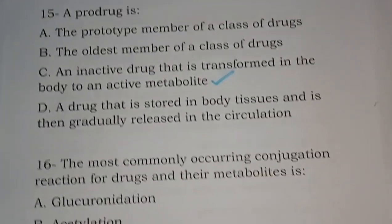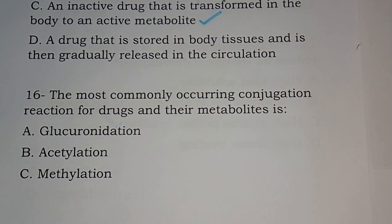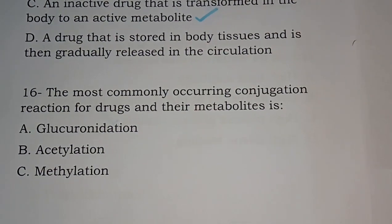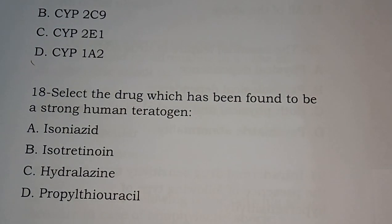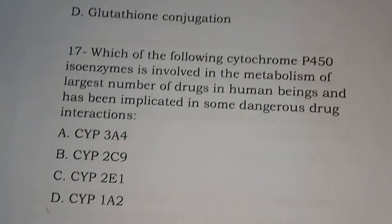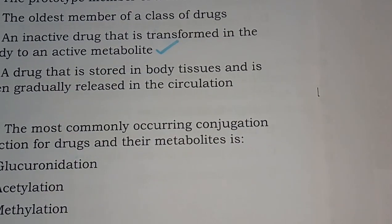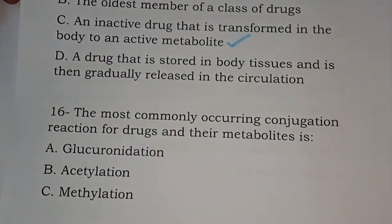Question number sixteen: the most commonly occurring conjugation reaction for drugs and their metabolites is? Options are: glucuronidation, acetylation, methylation, glutathione conjugation. Which of these is the most commonly occurring? The correct answer is option A — glucuronidation.